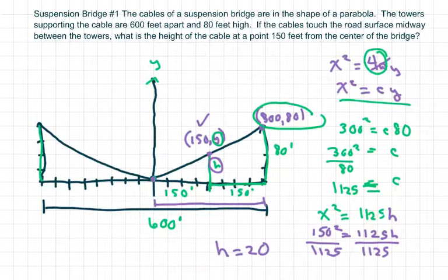So the height of the cable at 150 feet from the center of the bridge is 20 feet above the road surface.